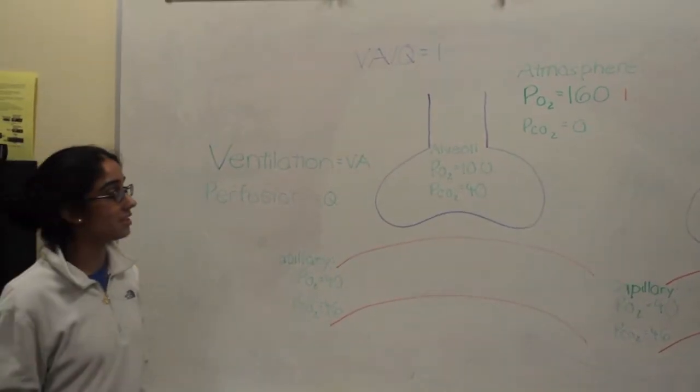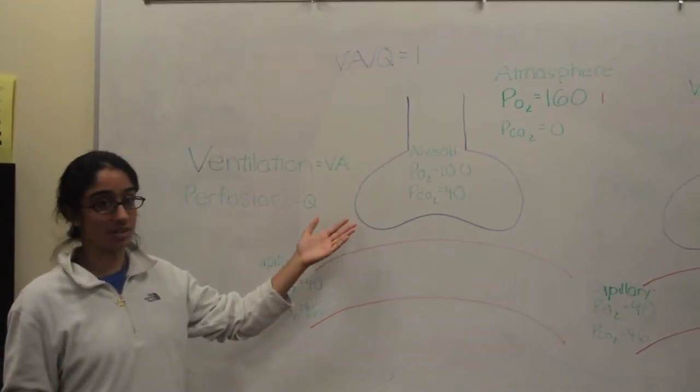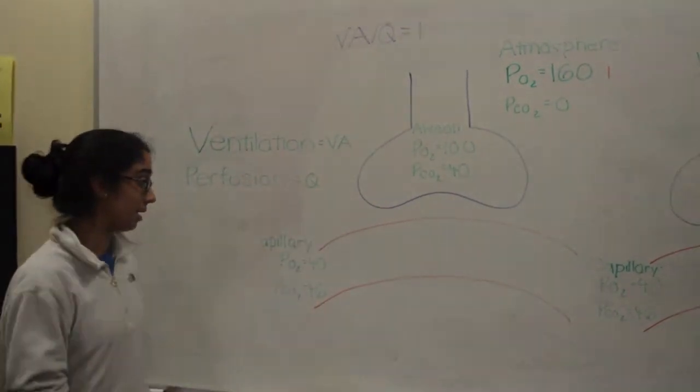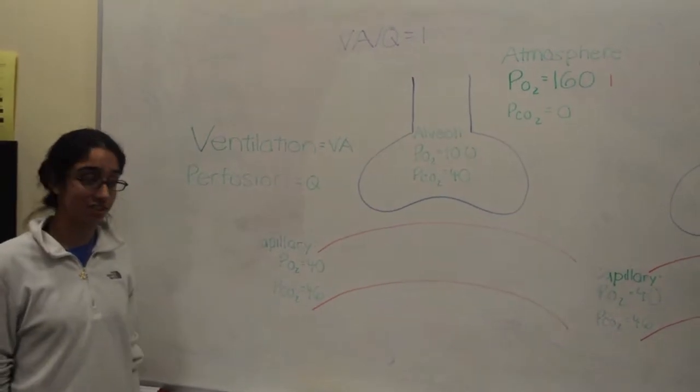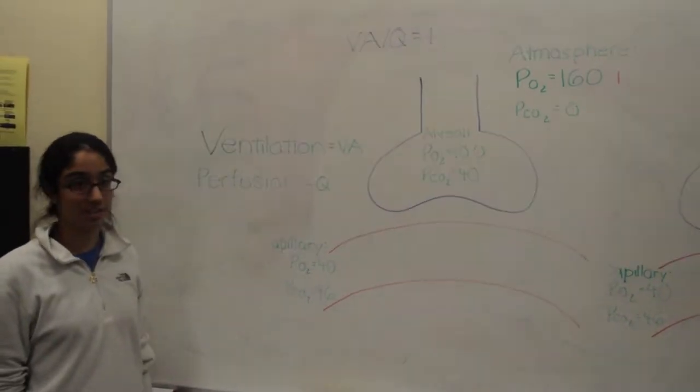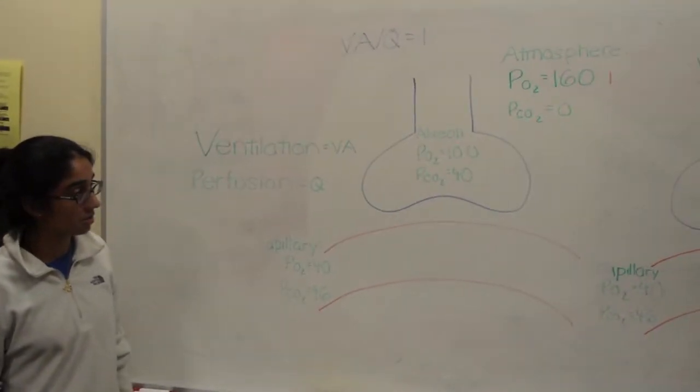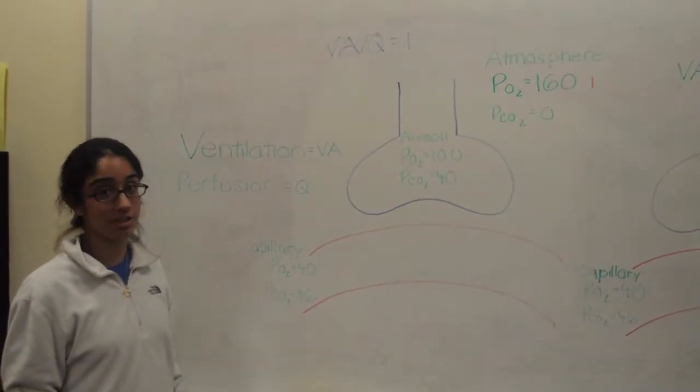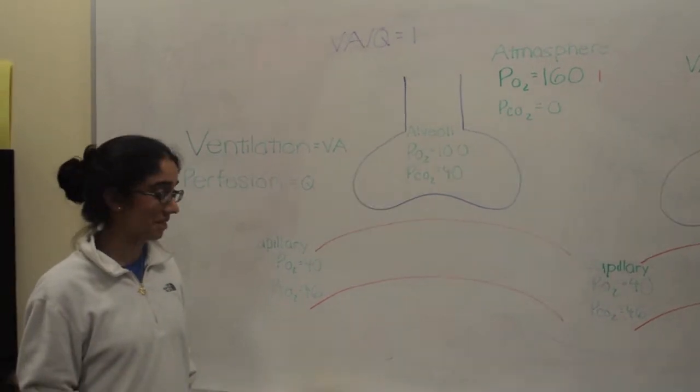Under normal circumstances, your alveoli has a partial pressure of oxygen of 100, and a partial pressure of carbon dioxide is 40. In your capillary, the partial pressure of oxygen is 40, and your partial pressure of carbon dioxide is 46. Under normal circumstances, the rate of ventilation matches the rate of perfusion, so your ventilation-perfusion ratio is 1.